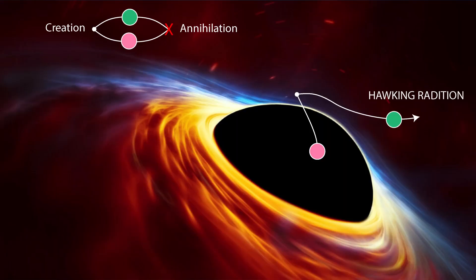Stephen Hawking famously predicted the existence of radiation coming from black holes due to quantum fluctuations at the event horizon, which would eventually lead to black holes evaporating. Unfortunately, we have never observed Hawking radiation because it is just too weak, and in many cases the signature of this radiation is below the cosmic microwave background. Our best chance is to find or make a super small black hole, which would start to rapidly evaporate, or we just make a non-gravitational black hole and study that instead.